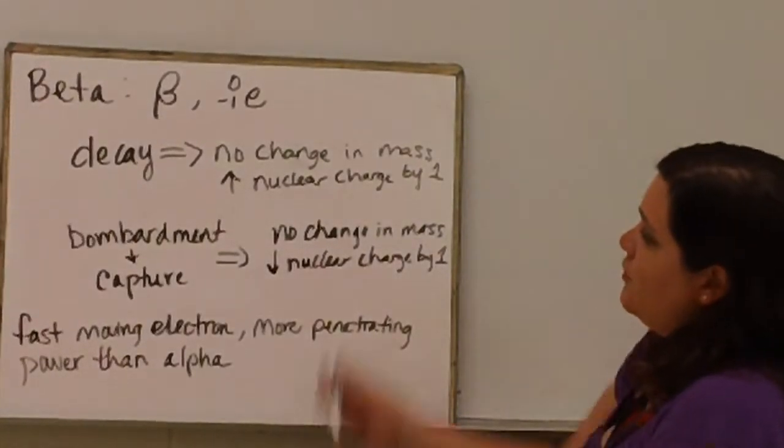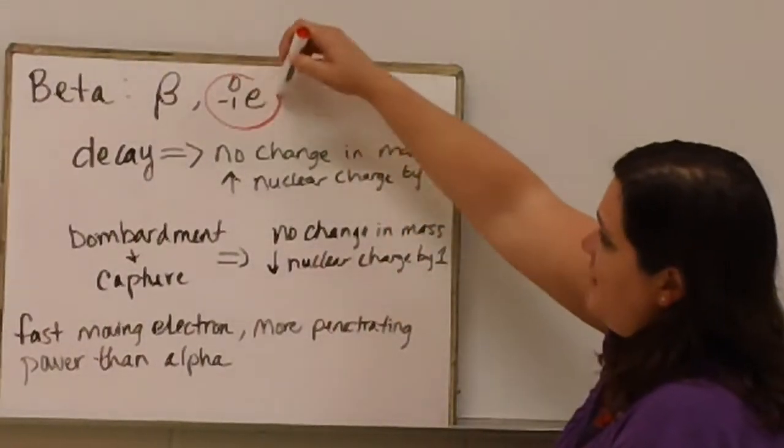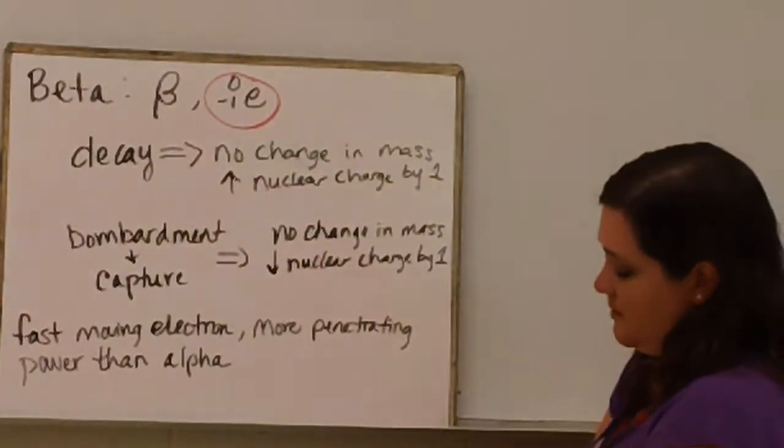Beta particles, we use the symbol most often 0-1e, but sometimes you will see this symbol as well.